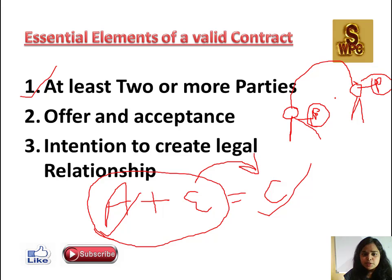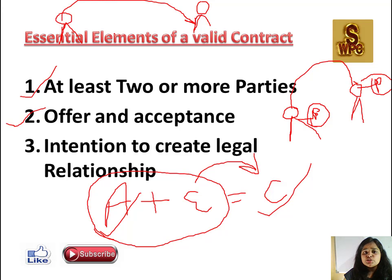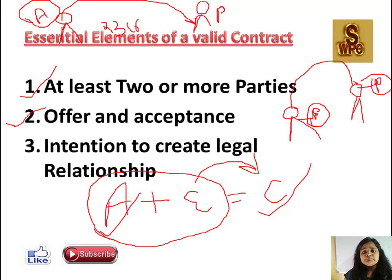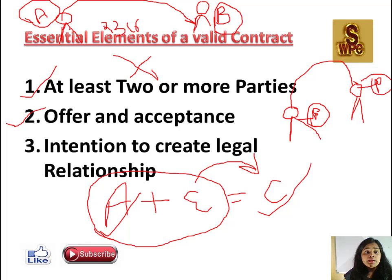Next point hai Offer and Acceptance. Ek person ne doosre person ko offer diya ki aap hamare saath contract karo, uske badle consideration rupees 3 crore hoga. Lekin agar Mr. B ne Mr. A ka offer accept hi nahi kiya toh kya in dono ke beech contract hoga? Nahi. Toh yeh bahut zaroori hai ki jab Mr. A offer kare toh Mr. B usko accept kare, tabhi in dono ke beech contract hoga.